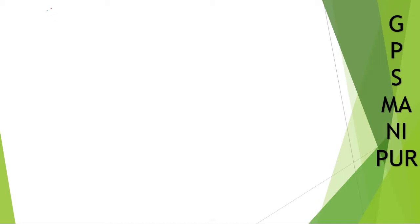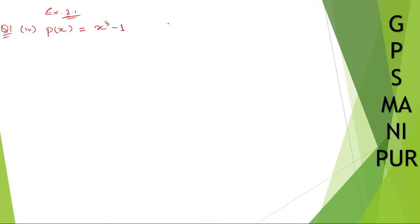Now we are doing exercise 2.1, question number 1, Roman number 4. Let me write down the question: P of x is equal to x cube minus 1, and D of x is equal to x minus 1. Solution — let's start.